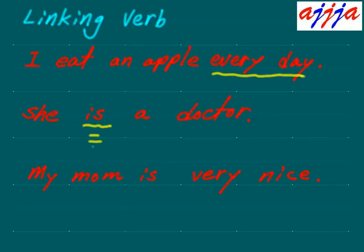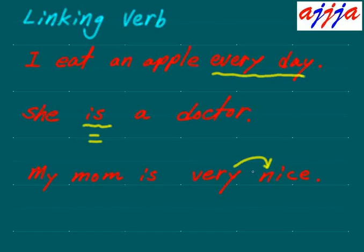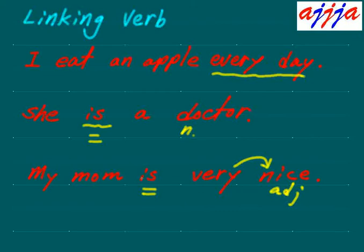She equals a doctor — that's the same person. She and a doctor are the same person. So you can replace 'is' with an equal sign. What about 'My mom is very nice'? Here, 'very' is just an adverb for the adjective 'nice.' So 'nice' is an adjective. You can use a noun or adjective after the linking verb, but still the same thing — my mom equals nice. You can replace this one with an equal sign. That's why those are linking verbs.